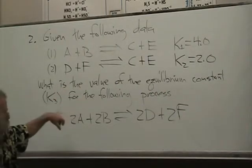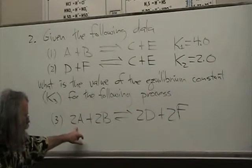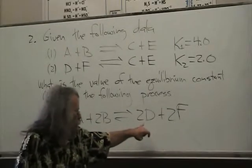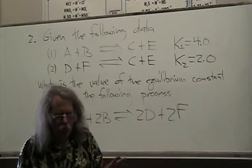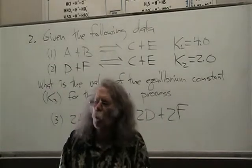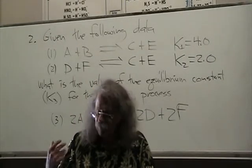What is the value of the equilibrium constant K3? The following process is 2A plus 2B in equilibrium with 2D plus 2F. And so I already heard somebody say, what law is this one? This is Hess's law.